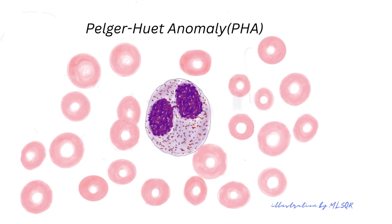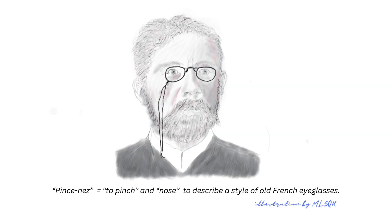Pelger-Huët anomaly is an autosomal dominant disorder characterized by decreased nuclear segmentation with a distinctive coarse chromatin clumping pattern. Note the sunglass appearance of the nucleus — bilobed with a thin filament. Pelger-Huët nuclei have been described in old textbooks as pince-nez, which is French, describing a style of old French eyeglasses that pinch the nose.